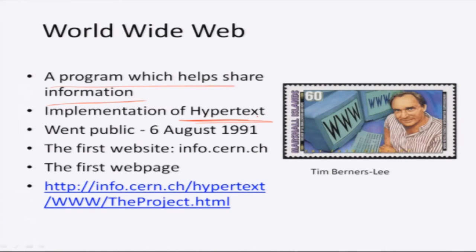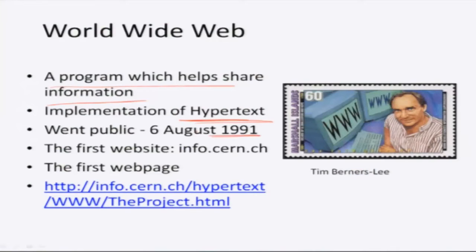Hypertext was built in Geneva way back in 1989. It was conceived in 89 but it got public in 91, and if you want to see the first web page, you can click this link and see how the first page looked like. Tim Berners-Lee is the inventor of the World Wide Web.